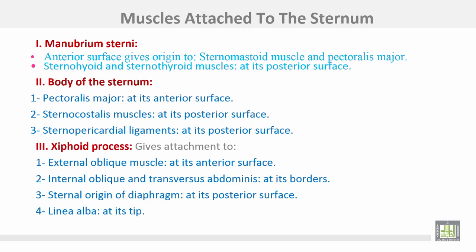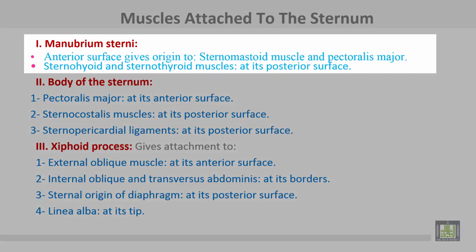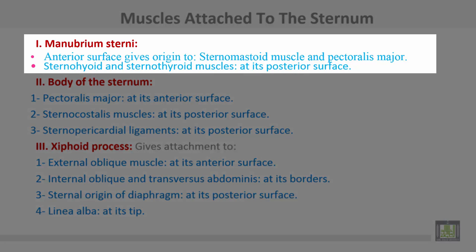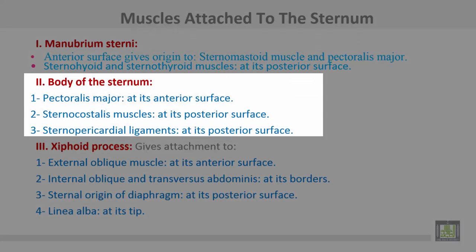Muscles are attached to the sternum. The manubrium sternum — its anterior surface gives origin to the sternomastoid and pectoralis major muscles, while the posterior surface gives origin to the sternohyoid and sternothyroid muscles. The body of the sternum — the pectoralis major arises from its anterior surface and the sternocostalis muscle from its posterior surface.